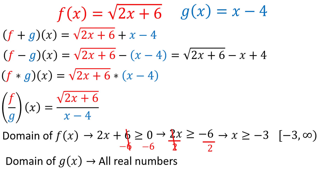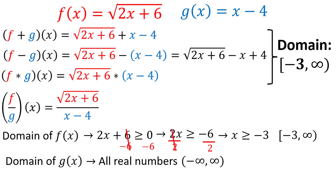For g(x), there's nothing that will restrict the function, so the domain is all real numbers, or (−∞, ∞). The domain of the combination is the most restrictive of the two domains. Since g(x) contains all real numbers, it is not restrictive at all, while f(x) is restricted to x ≥ −3. So the domain common to both is x ≥ −3, or [−3, ∞), which is the domain of the addition, subtraction, and multiplication combinations.